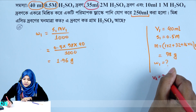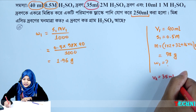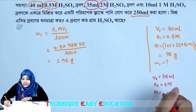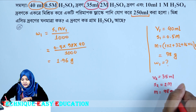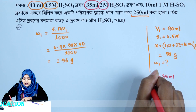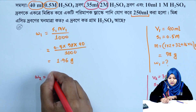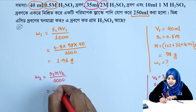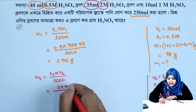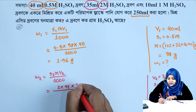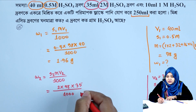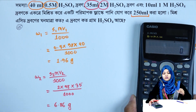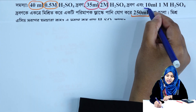For the second drop: V2 = 35 ml, S2 = 2 molar, molar mass M = 98 grams. w2 = S2 × M × V2 / 1000 = 2 × 1 × 98 × 35 / 1000 = 6.86 grams. So the mass of sulfuric acid in the second drop is 6.86 grams.